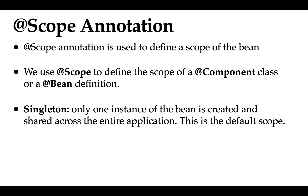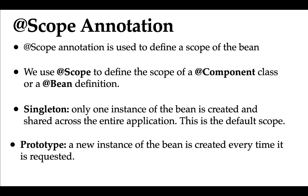We are going to use @Scope annotation to define singleton scope. Singleton scope means only one instance of the bean is created and shared across the entire application. This singleton scope is also the default scope. In case of singleton scope, the Spring IoC container creates only one instance of that bean, and that instance is shared across the entire application.